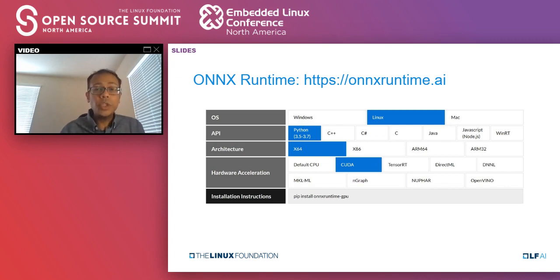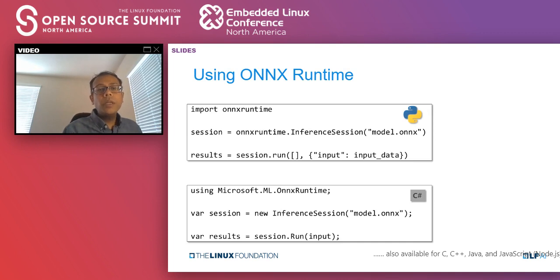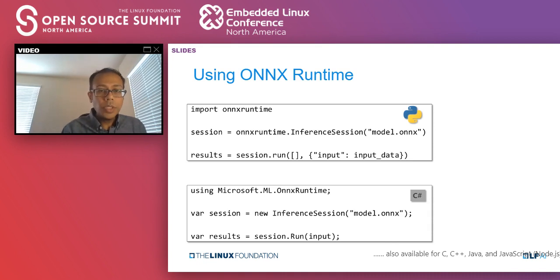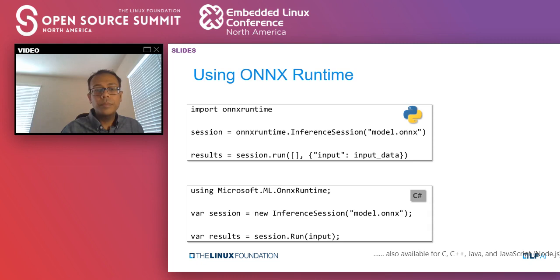I encourage you to try this out — you can go to this site, and there's also a link to the GitHub if you need to get the source and compile it yourself. Once you have it, how do you use it? We have APIs in all different languages. For Python, after you pip install ONNX Runtime, you can import it, create a session — there's one session per model — initialize that session, and then run it by passing in the input.